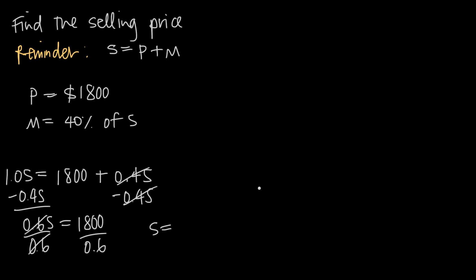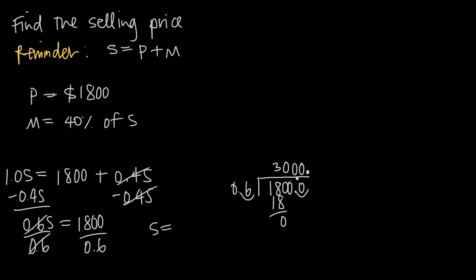Now we need to divide both sides by zero point six to solve for S, which leaves S equal to eighteen hundred divided by zero point six. To do the decimal division, we move the decimal one place to the right on both numbers, giving us eighteen thousand divided by six. Six goes into eighteen three times, so we get three thousand. The selling price is three thousand dollars.